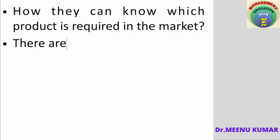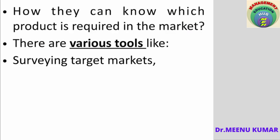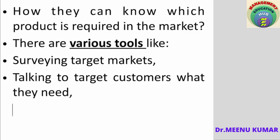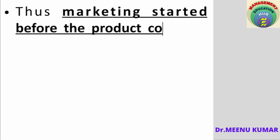The marketing department has to suggest what type of product has to be launched. There are certain tools and ways to understand what type of product is required in the market. First: surveying the target market. Second: talking to target customers — what they really need, what their requirements are. Third: doing marketing research. Fourth: talking with experts of the industry. Using these tools, the marketing department can get a clear idea of what type of product should be launched. So you can see that marketing starts before the product even comes into existence.